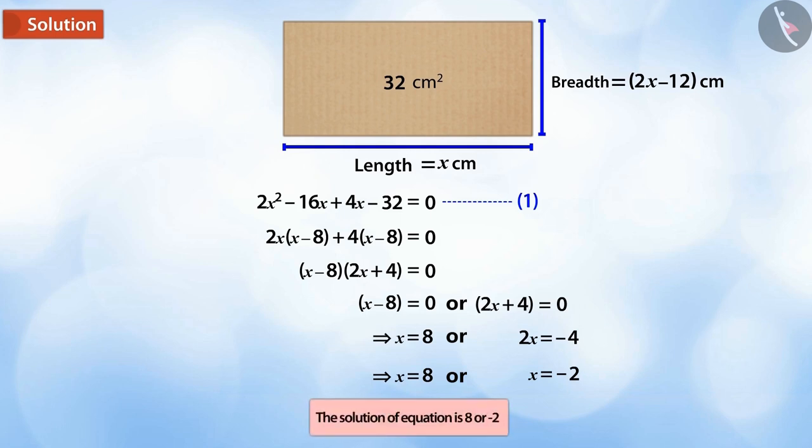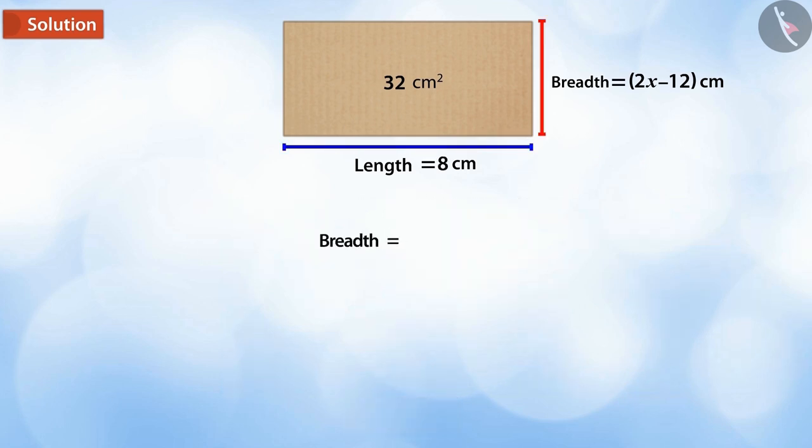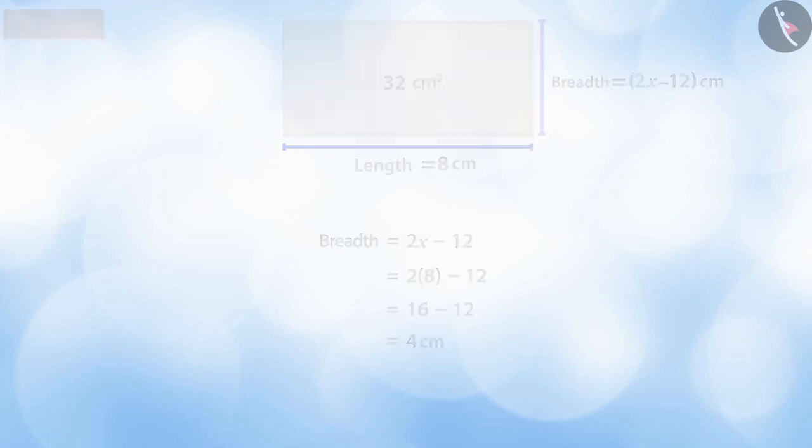Therefore, x is equal to 8 or x is equal to minus 2 are the solutions for the given quadratic equation. Since we are calculating length of a box, so it cannot be negative. Therefore, the length of the box would be 8 cm. And breadth would be calculated from 2 multiplied by 8 minus 12 is equal to 4 cm.